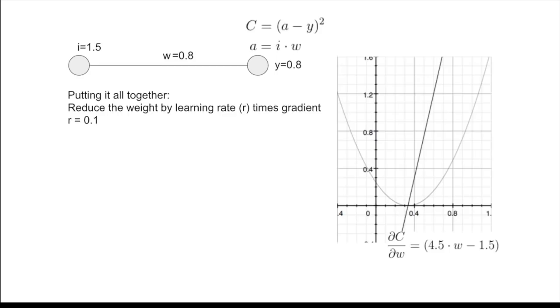So, now we have all the parts we need to actually learn and train the model. We are going to reduce the weight, or modify the weight, proportionately to the gradient. We also use the so-called learning rate to define by how much exactly we are going to bring the effect of the gradient into our variables. So, in a simple expression, we deduct from w, the old w,